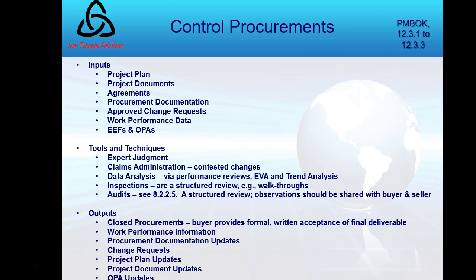Moving now to inputs, tools, techniques, and outputs, beginning on page 495. Remember, the project management plan is an input to every control process, as is work performance data, EEF, and OPA. Other inputs that make sense here: agreements — my contracts — the procurement documents that went with them, and any approved changes. Remember, approved changes also appeared in direct and manage project work.